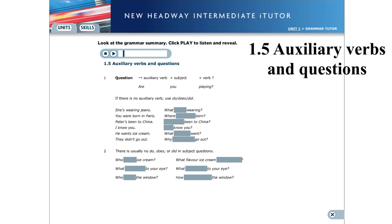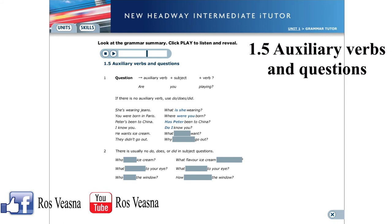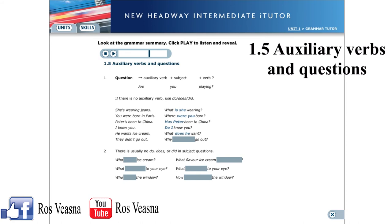1.5 Auxiliary verbs and questions. The word order for questions is different from positive and negative sentences — we use the auxiliary verb, then the subject, then the full verb: Are you playing? If there is no auxiliary verb, we use do, does, or did. She's wearing jeans / What is she wearing? You were born in Paris / Where were you born? Peter's been to China / Has Peter been to China? I know you / Do I know you? He wants ice cream / What does he want? They didn't go out / Why didn't they go out?